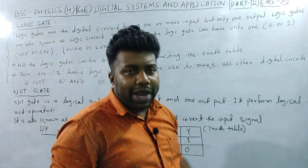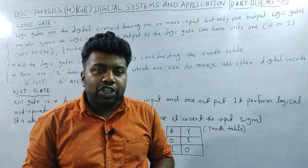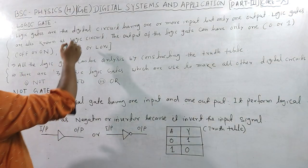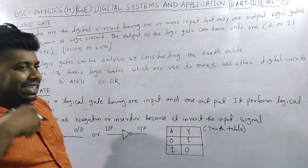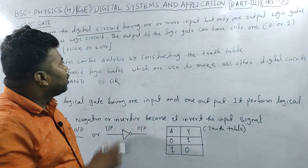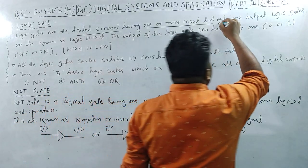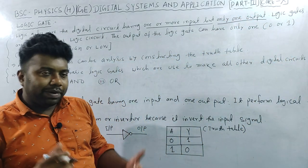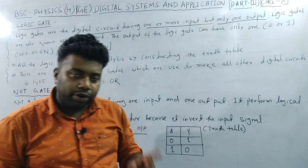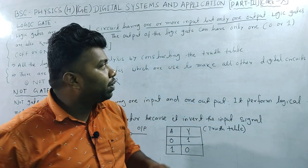If you want to use a computer or laptop, you can use a logic gate. The logic gate is a digital circuit having one or more inputs but only one output. That is called a logical circuit, or digital circuit, or logic gate.